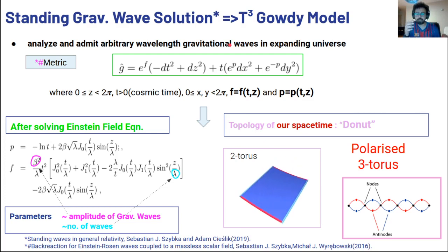This spacetime represents an expanding universe where there are gravitational waves of arbitrary wavelength and they are interacting with each other and forming standing gravitational waves. Here the wave is in the z direction, and the z coordinate goes from zero to 2π. t represents the cosmic time. x and y are also periodic which goes from zero to 2π, and the main protagonists are these functions f and p which are functions of t and z. When you solve the Einstein equations you get the form of this p and f, and in this there are two important parameters: one is beta which controls the amplitude of the standing gravitational waves, and second is lambda which controls the number of waves there are.